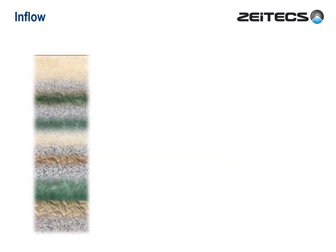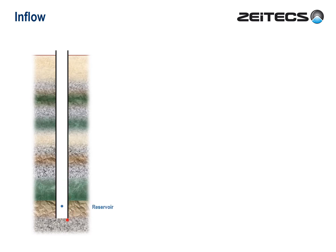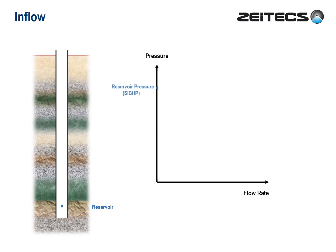So here we go. Let's start by drilling a well into the reservoir and considering an imaginary point at reservoir depth. This point will have a certain ambient pressure, known as reservoir pressure, or sometimes shut-in bottom hole pressure. The first concept I'd like to introduce is reservoir productivity, or more specifically, productivity index, measured in barrels per day per psi.